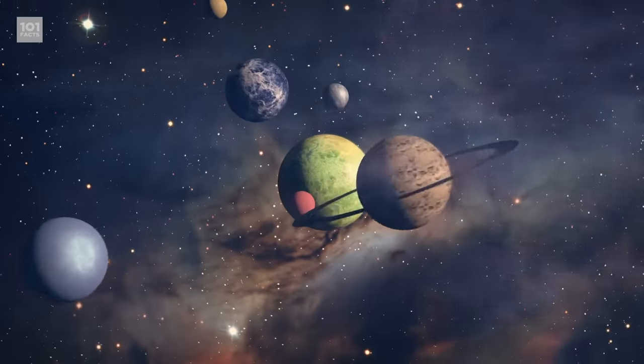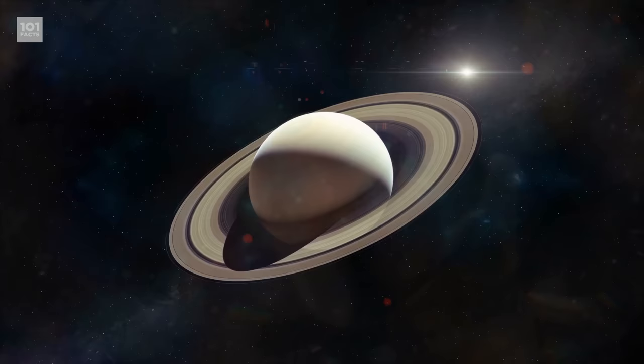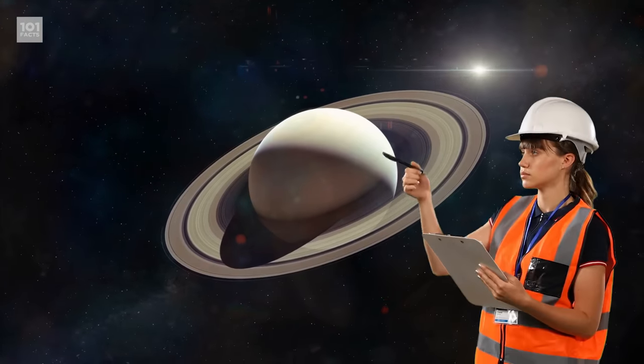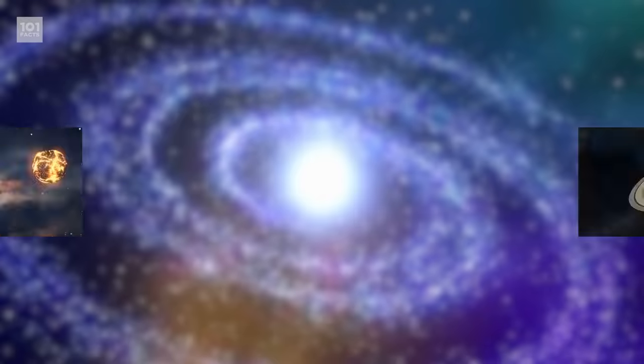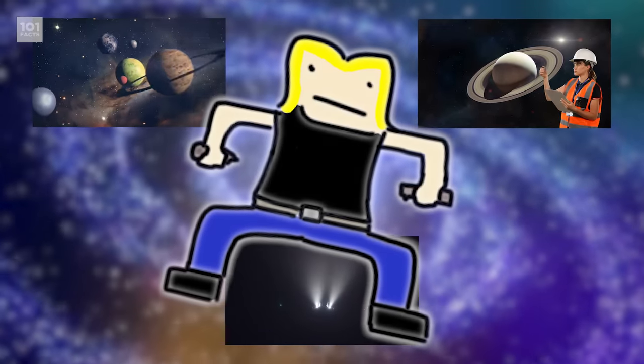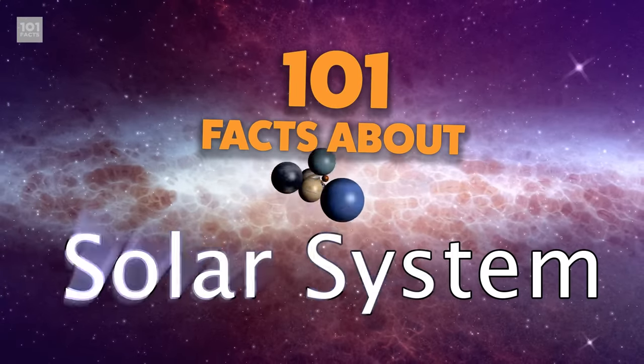But which planets are secretly saving our lives all the time? How many rings exactly does Saturn have? And can we pretend that airplanes in the night sky are like shooting stars? Two out of three of those questions are going to be answered as we take off into 101 Facts About The Solar System.